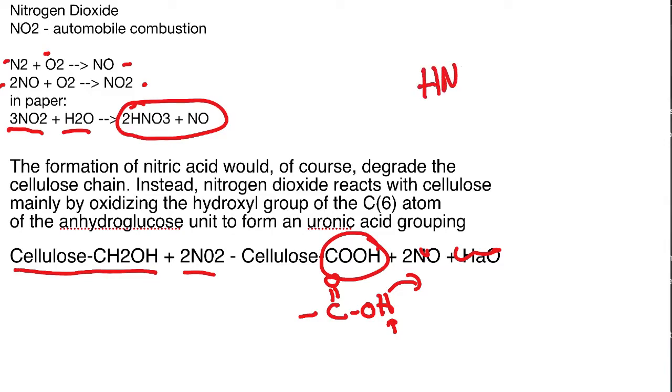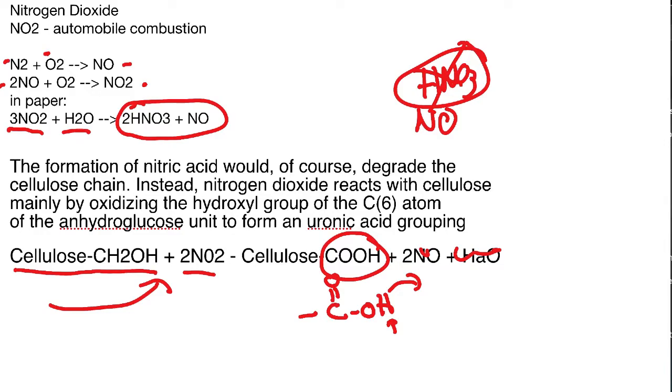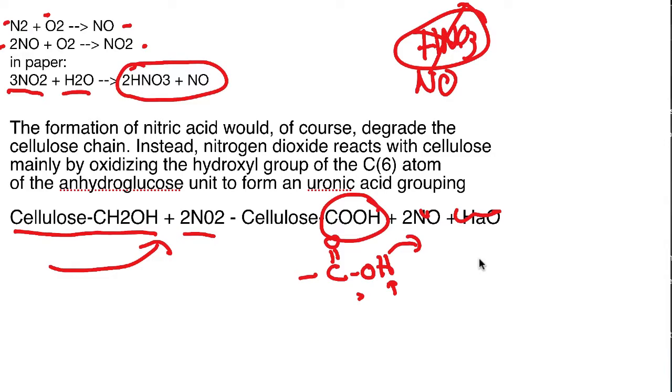So NO₂ is bad news: if it's forming nitric acid, obviously bad; but even as NO₂ directly, you get this oxidative degradation of the ends of your cellulose chains, making them more acidic. While oxidation with nitrogen oxide does not usually directly disturb the fiber structure of the cellulose, the conversion of alcoholic groups to carboxylic acid groups will certainly increase the acidity of paper. That's why you always hear 'acid-free paper,' 'acid-free backing board' — though that label really only had meaning up until the late 80s or early 90s.